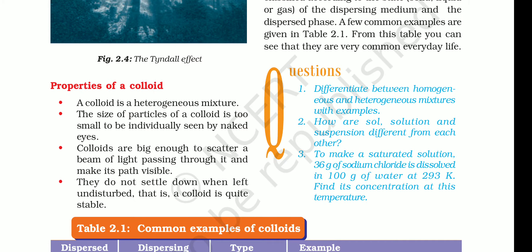To summarize colloidal properties: it is heterogeneous in nature. The particles are very small and cannot be seen by the naked eye, but when we pass a torch light through it, those tiny particles are easily visible. Colloids are big enough to scatter a beam of light and make its path visible. They do not settle down when left undisturbed, so colloids are quite stable.